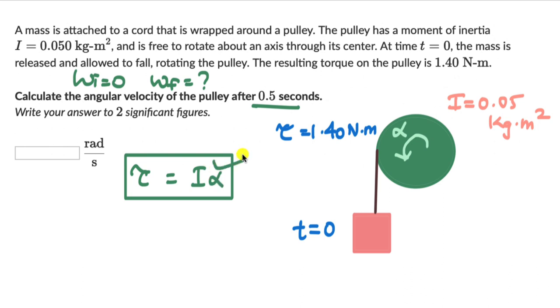First, let's figure out what alpha is. We know tau, that is 1.4, so 1.4 equals 0.05 into alpha. So alpha is 1.4 divided by 0.05, which is 28 radians per second square.